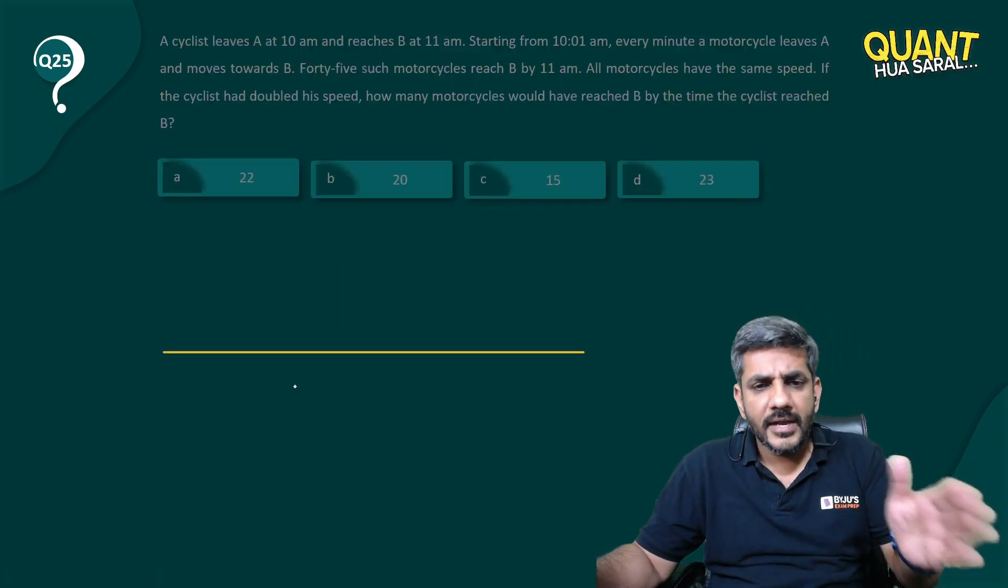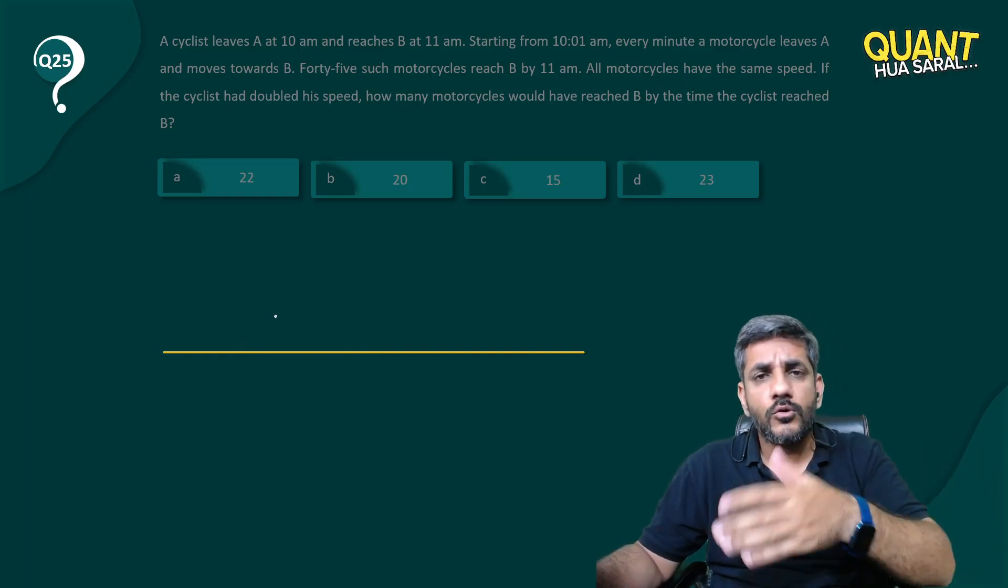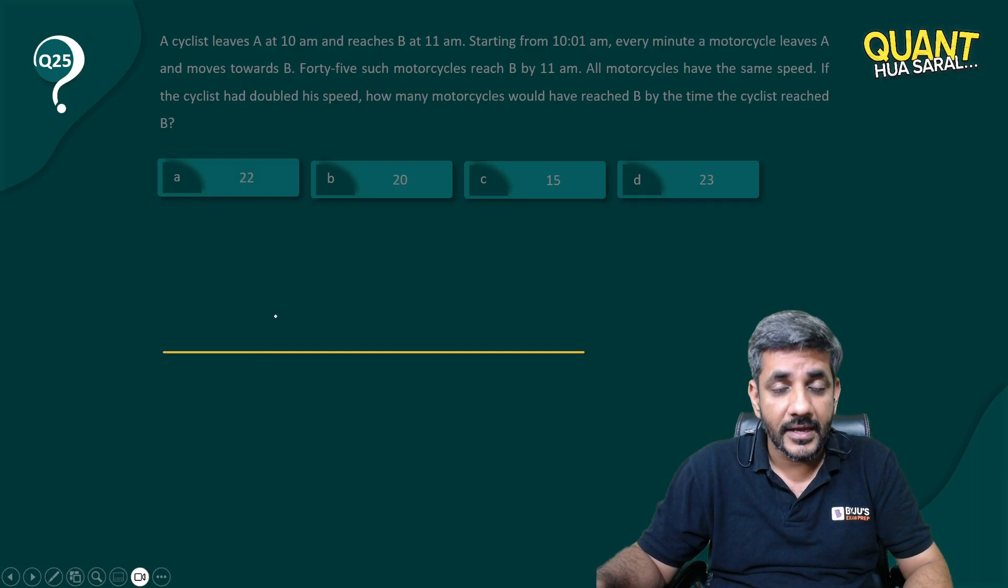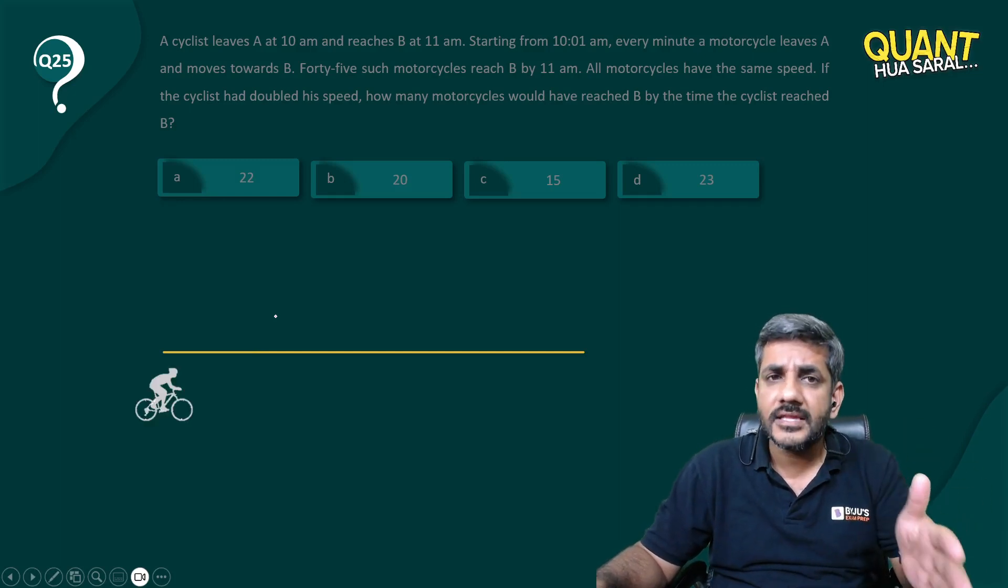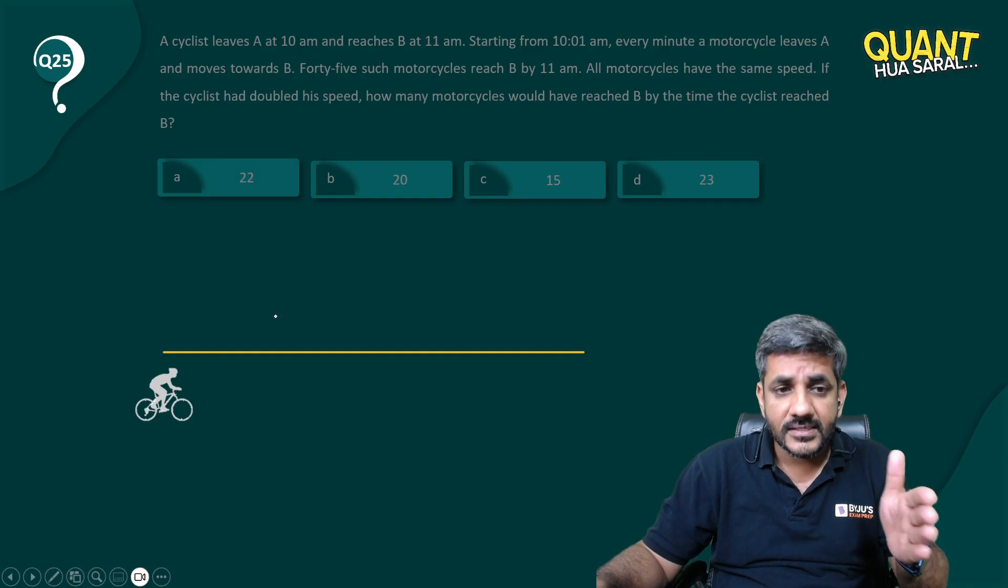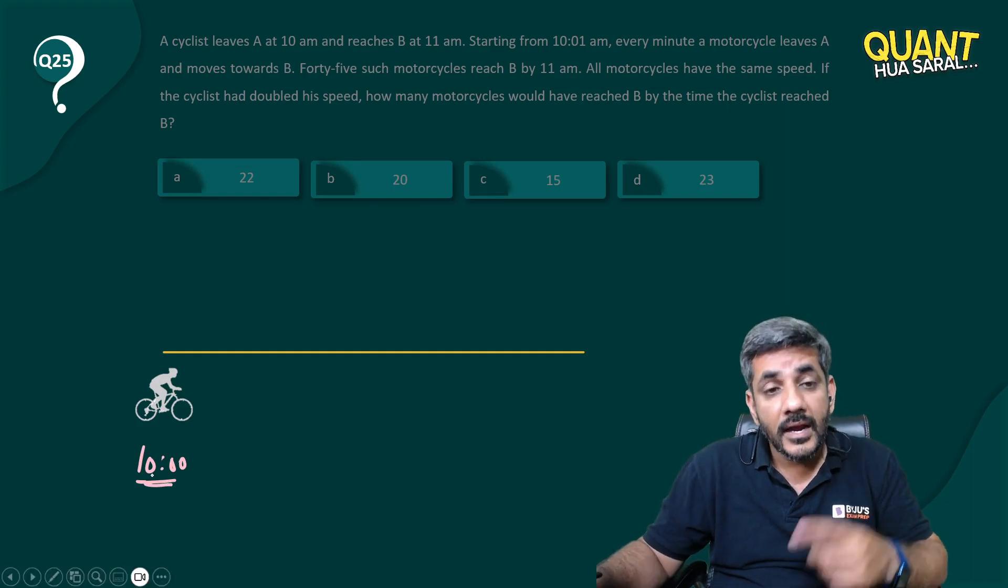So I made a track over here. The cyclist starts from one end and he goes to the other end by 11 am, something like this happens. The cyclist is currently here at the first end and this is the stage where he is at exactly 10 o'clock because he starts from here at 10 o'clock.